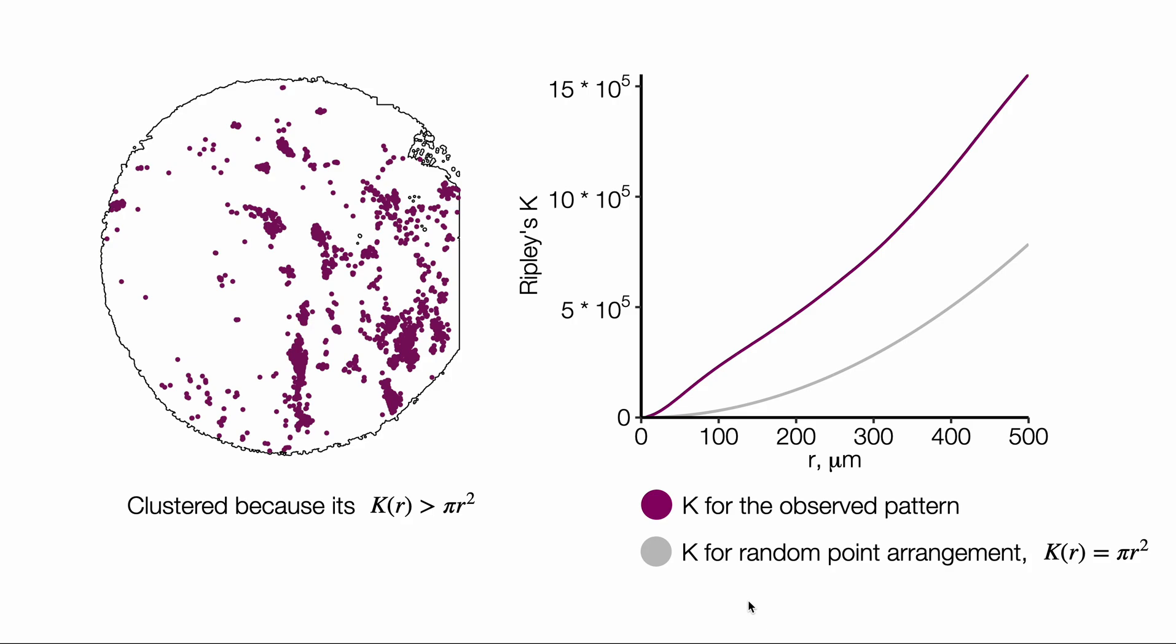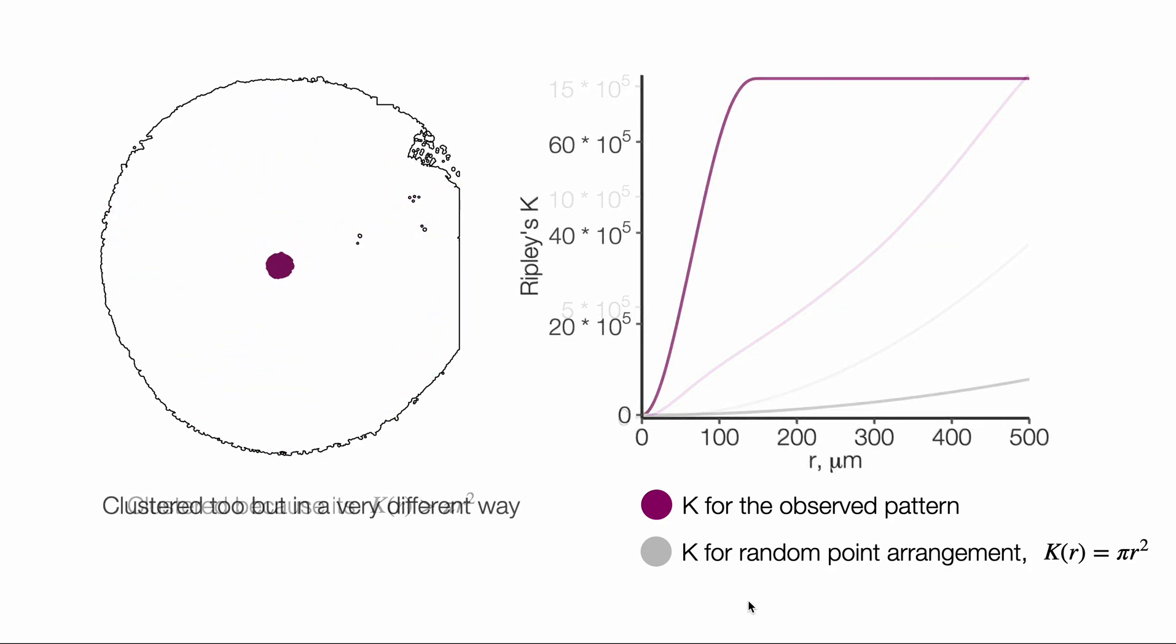However, simply detecting clustering does not tell us much about the spatial structure. Look at the single cluster, which is much denser than our example point pattern. k-function fails to capture this difference in a meaningful way, because it is not bounded from above. This means that there is no maximum value necessary for the intuitive interpretation of the k-function.